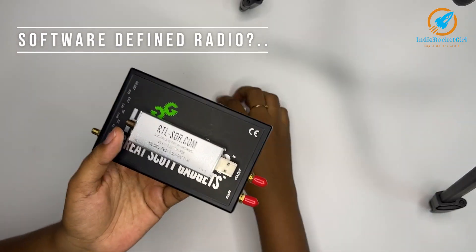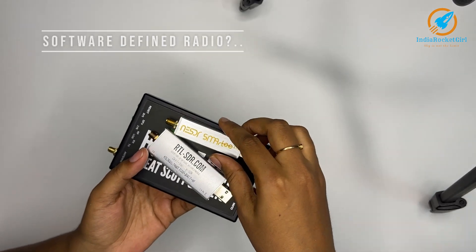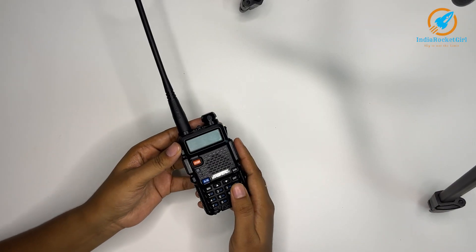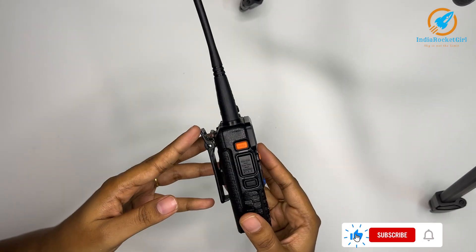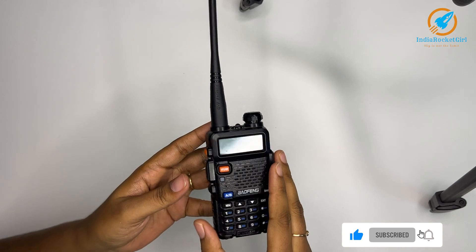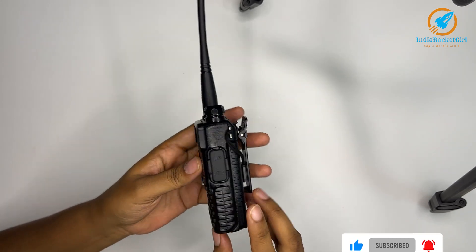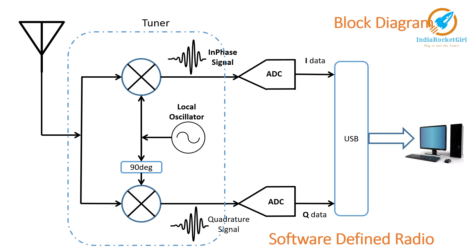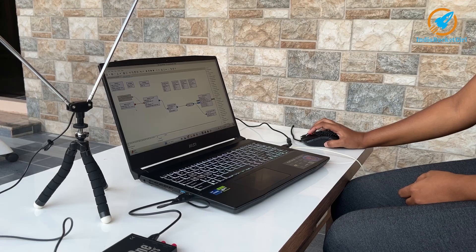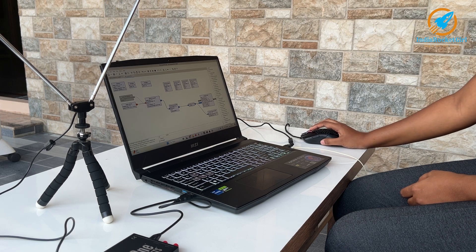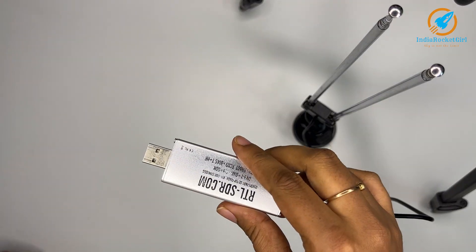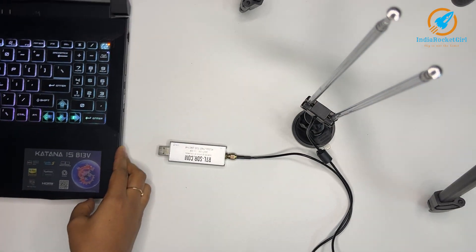What is software-defined radio? Consider traditional radios where the entire communication system is implemented using hardware — this is one such radio, where all transmission and reception blocks are implemented using hardware. In a software-defined radio, some parts of the communication system are hardware and others are implemented using software. This gives the flexibility of implementing either analog or digital communication systems.